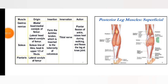Soleus: originates from the soleal line of the tibia, head, and upper one-third of the fibula. Insertion is via the Achilles tendon into the tuberosity of the calcaneus. Plantaris: originates from the lateral condyle of the femur, and also inserts via the Achilles tendon into the tuberosity of the calcaneus.